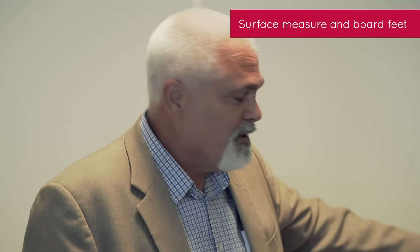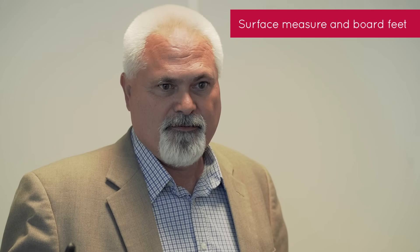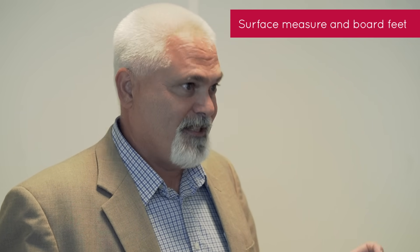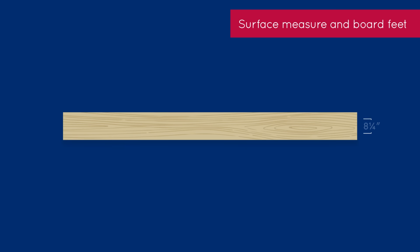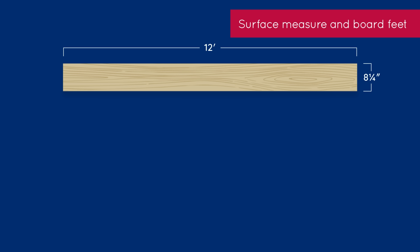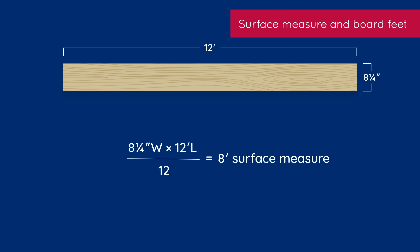To calculate surface measure, it's the width of the board in inches with fractions, times the length in feet — and we always round down to the nearest whole foot, called standard lengths. So in this case, it's 8¼ inches wide by 12 feet. Multiply those two numbers, divide by 12, and round to the nearest whole number. That gives you 8 — what we call 8-foot surface measure. It could be considered square feet, but it's not really because we round it.